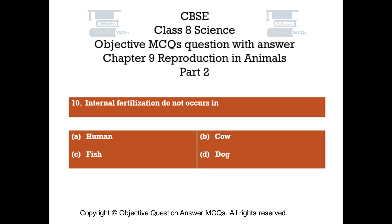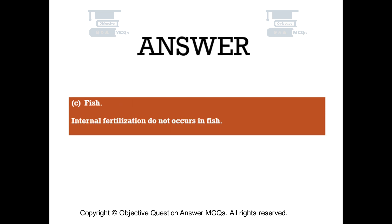Question number 10. Internal fertilization does not occur in. Option A: Human. Option B: Cow. Option C: Fish. Option D: Dog. The right answer is Option C: Fish. Internal fertilization does not occur in fish.